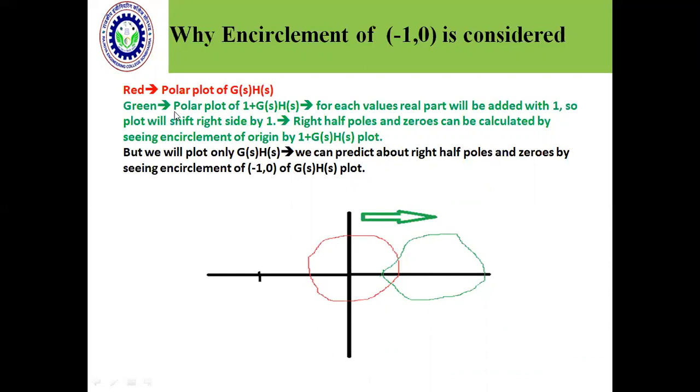So if we make 1 plus G(s)H(s), then it will represent this. What does the polar plot represent? The origin of the polar plot represents the number of poles and zeroes that we put on the right half of s plane.